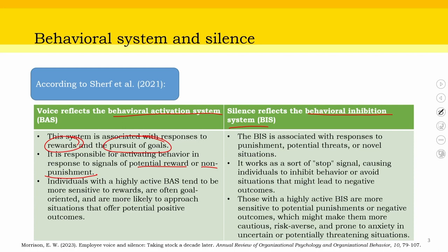Whereas when you come to BIS — the behavioral inhibition system — it responds to punishment, potential threats or novel situations. These are the areas where we tend to be silent, where BIS sets in. It works as a sort of stop signal, a caution, a pause — causing individuals to inhibit behavior or avoid situations that might lead to negative outcomes. You are looking into situations involving potential threat from your boss or co-worker, or moving into uncertain territories, maybe new to the entire organization.